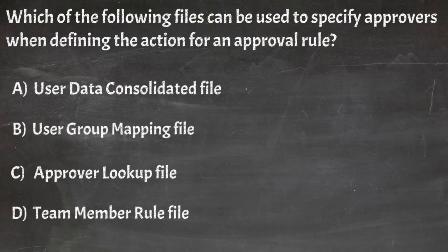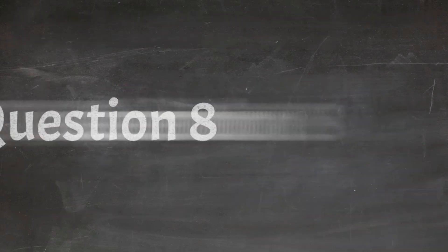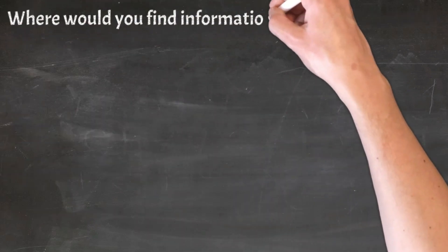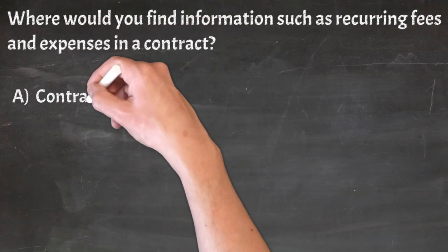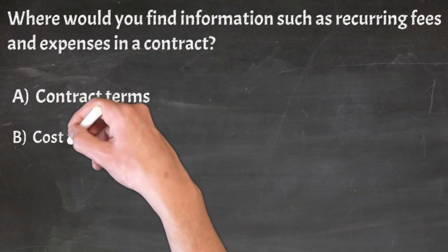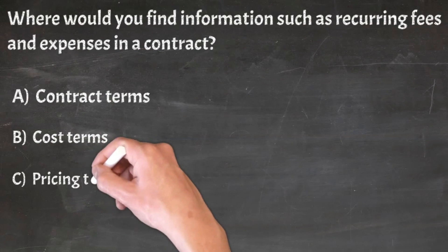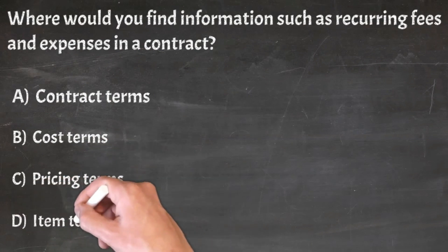Correct answer: C. Approval lookup file. Question 8: Where would you find information such as recurring fees and expenses in a contract? A. Contract terms, B. Cost terms, C. Pricing terms, D. Item terms.